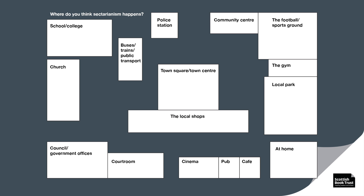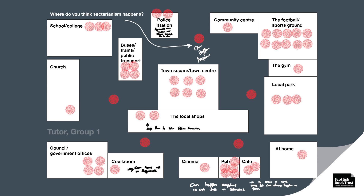Here are three examples of maps created by learners and tutors from different groups across the country. In this first map, created by the tutor working on his own, you'll see a lot of marks and some handwritten notes. What happened here was the tutor created a ranking system — more dots where sectarianism was most likely, fewer where less likely — with most handwritten notes saying 'can happen anywhere.' When discussed afterwards, the tutor admitted he'd slightly misread the question and assumed he was being asked where sectarianism can happen.